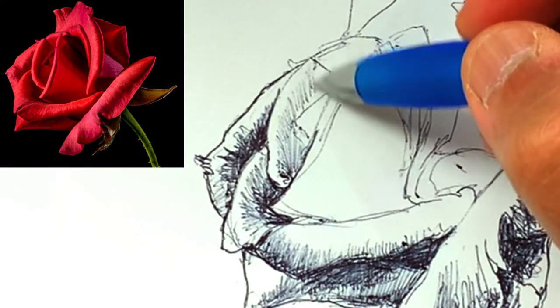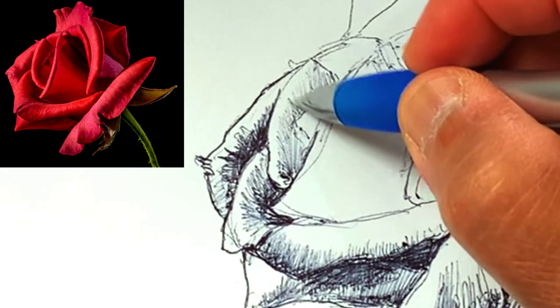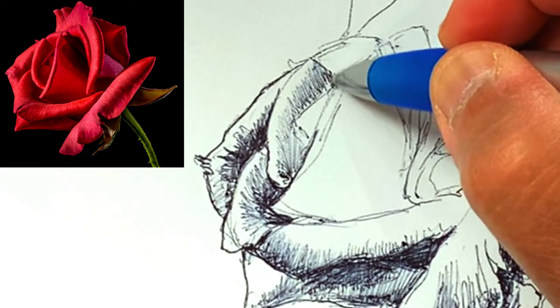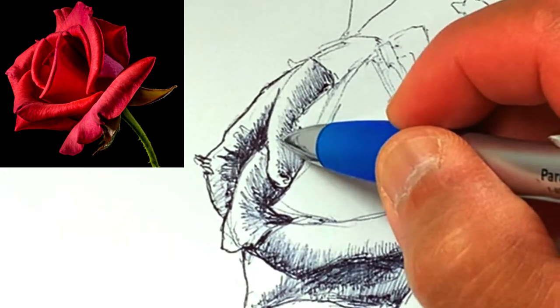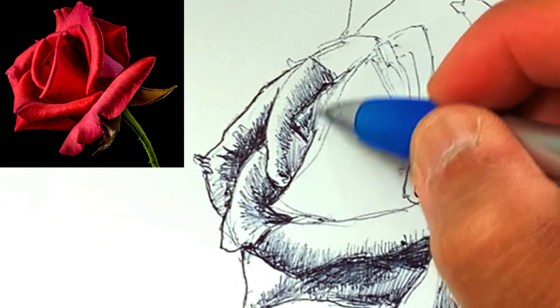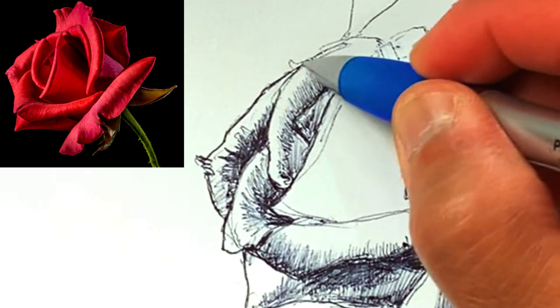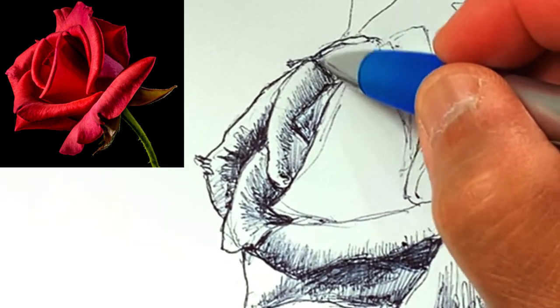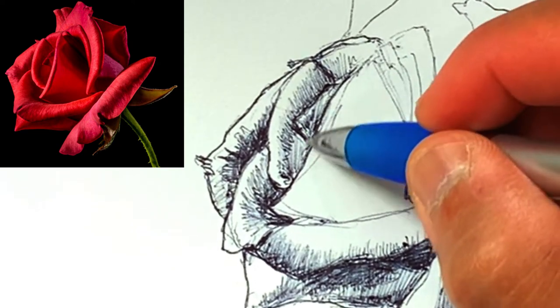The fastest way for me personally to put in some shading is to just use scribbly lines. I go ahead and just try to go from left to right here for the most part.